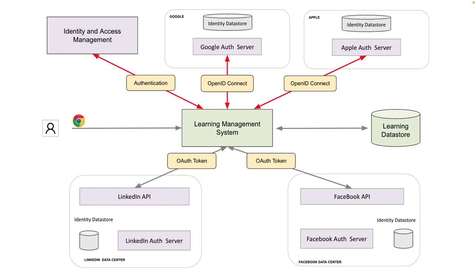In short, this is the big picture of the difference between OAuth and OpenID Connect. OAuth users are not interested in information about the users — they are simply interested in the access token so that they can call the APIs. OpenID Connect, on the other hand, is specifically interested in user information and may not be interested in the access token.